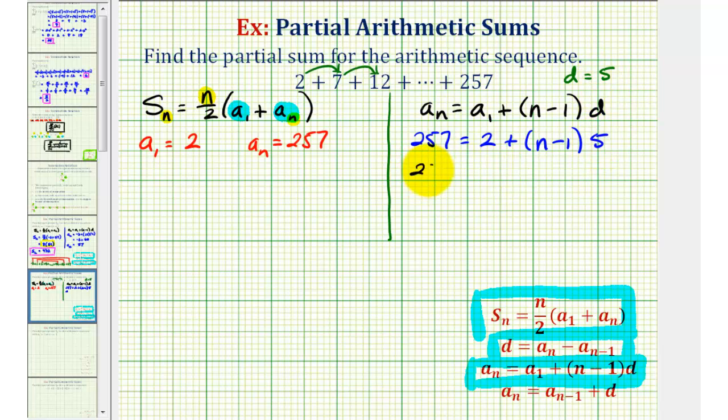So we'd have 257 equals, if we distribute, we'll have five n minus five. Well two minus five is negative three, so I'll have five n minus three. Add three on both sides, we'd have five n equals 260. Divide both sides by five. We have n equals 52.